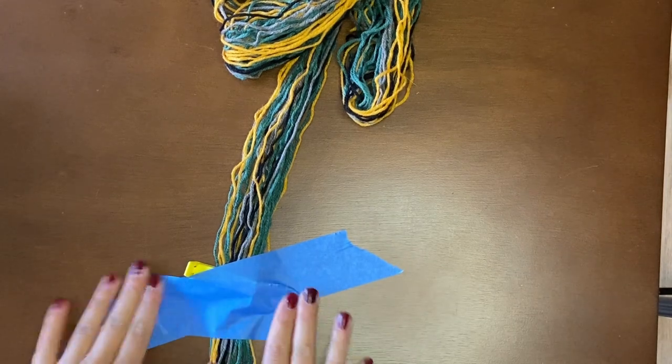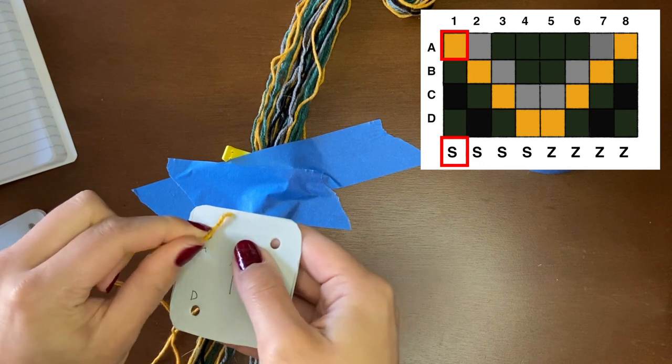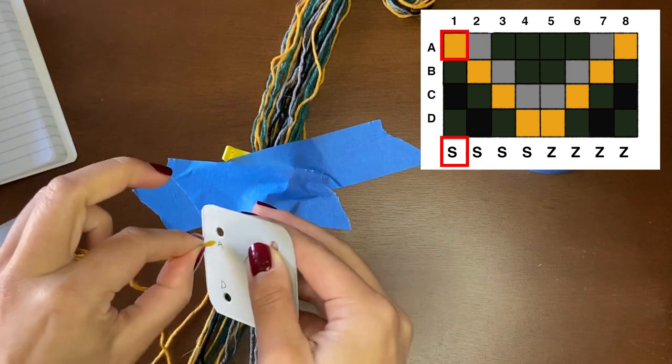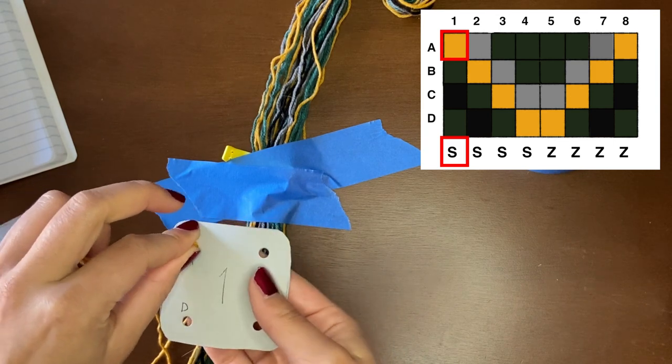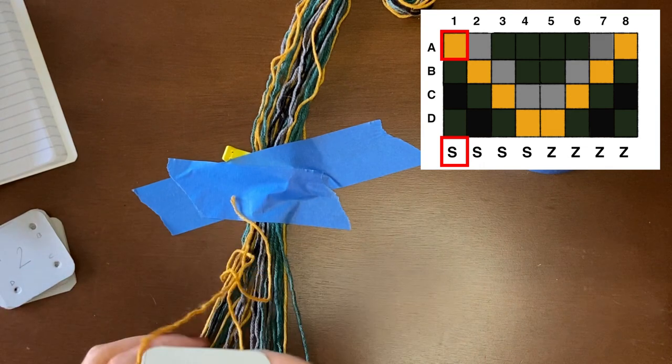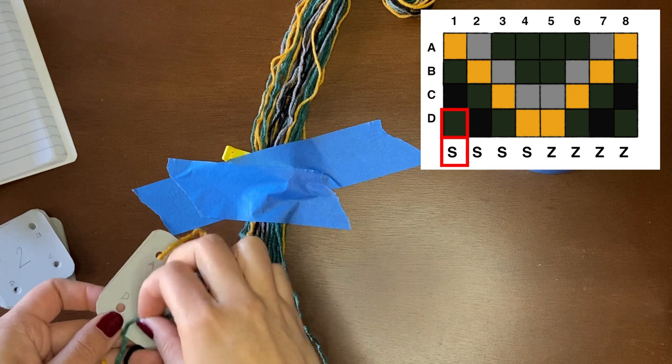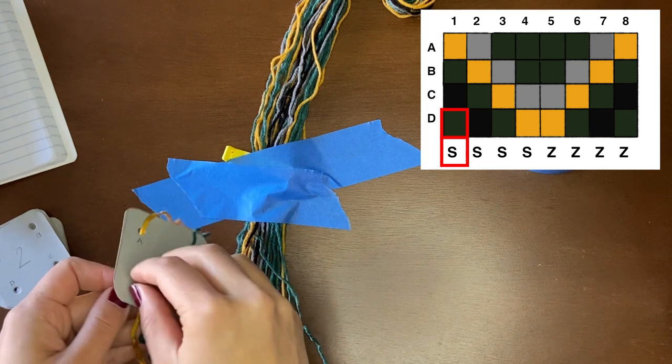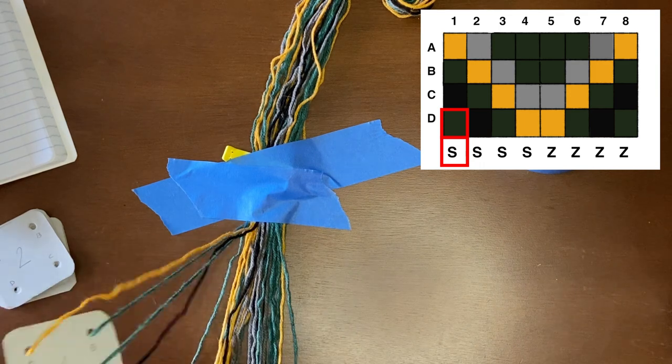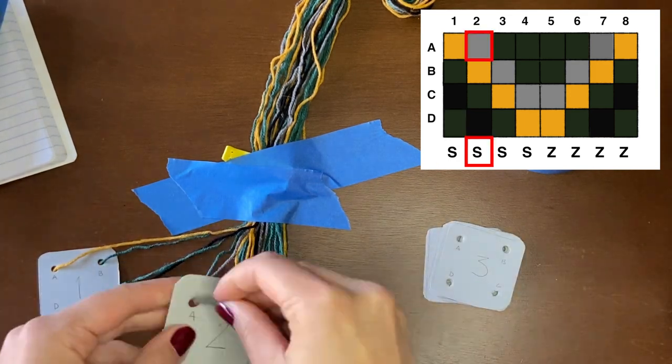Now let's take a look at the pattern and learn how to read it. The number at the top refers to the card so grab card number 1. The column represents the holes in the card from A to D and the letter S at the bottom means that the yarn should be threaded to the hole from the front of the card. So the first square is a yellow thread that goes to hole A from the front, the square below it is a green thread that goes through hole B and so on. Follow this logic with all cards up to card 4.